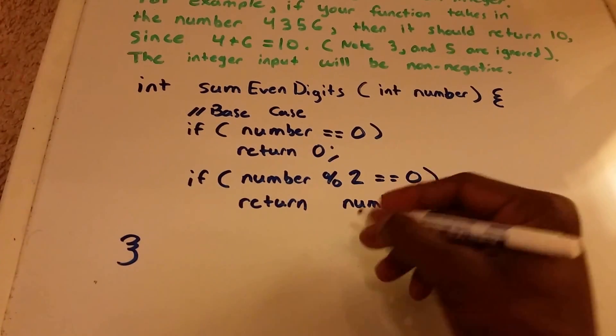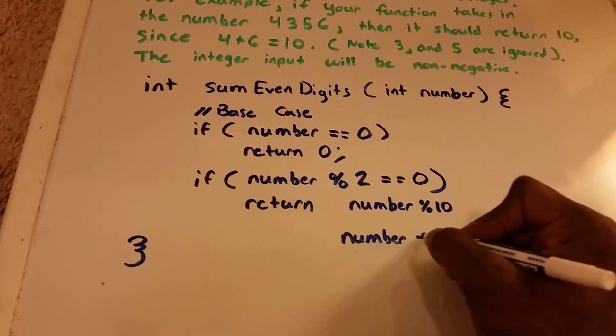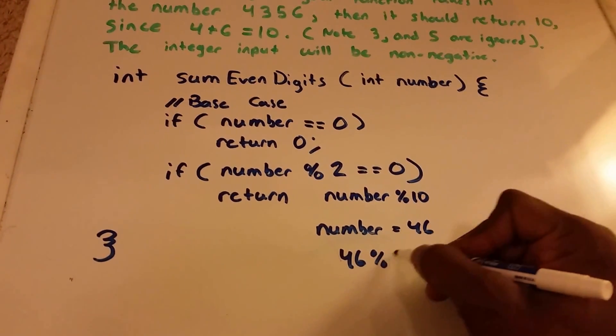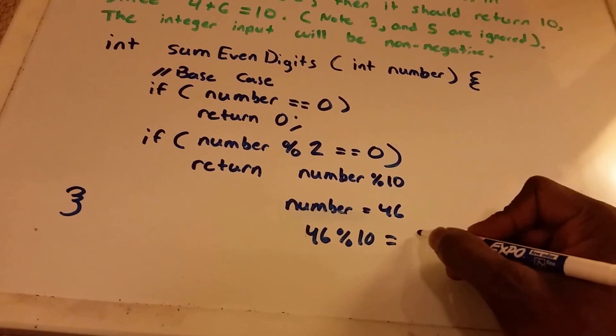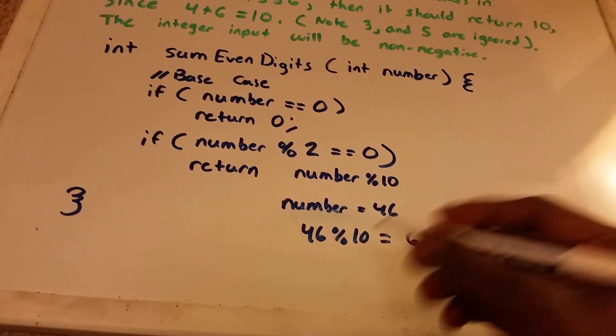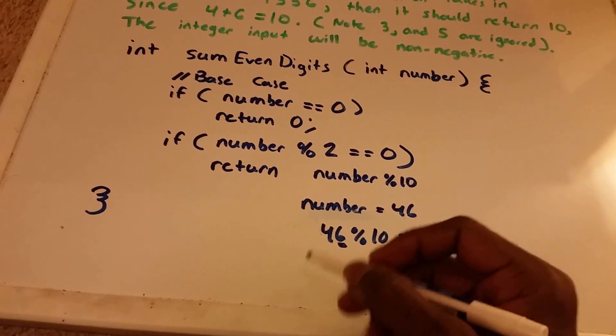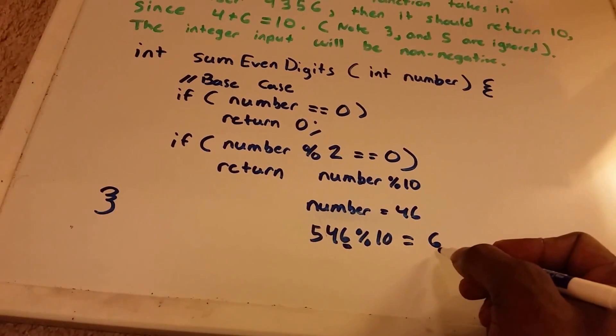For instance, if we have 46, if we let number equal 46, then 46 mod 10 equals 6. So we get that number right there, that very last digit. If I had 546 mod 10, I still get back 6.